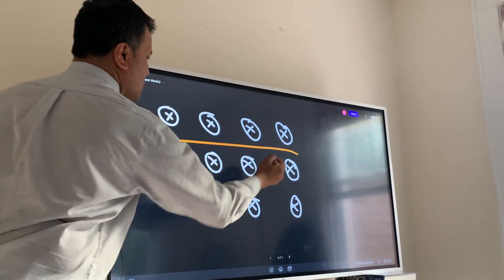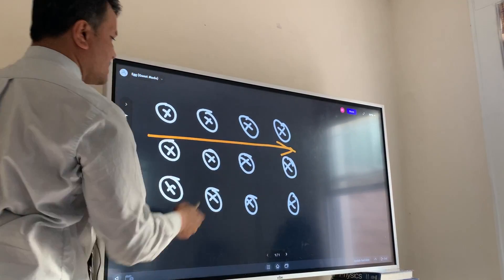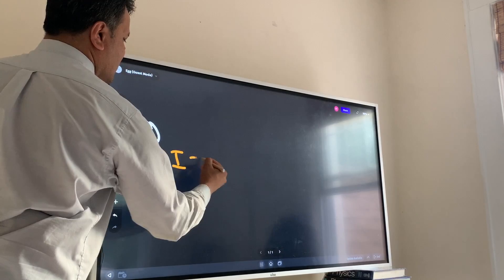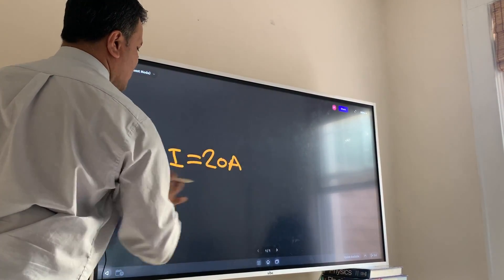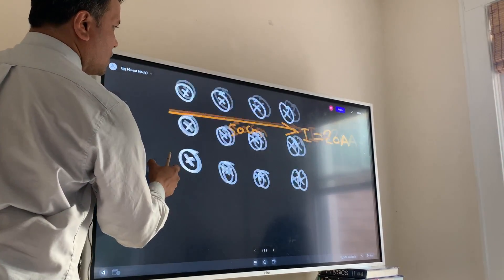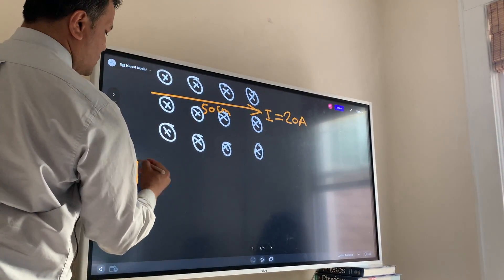So now someone decided to place a wire. The wire goes through this magnetic field at this direction and the wire carries current. Let's say the wire carries 20 amps and the wire is 50 centimeters long. What do you want to know? We want to know the magnetic force.